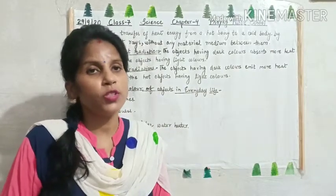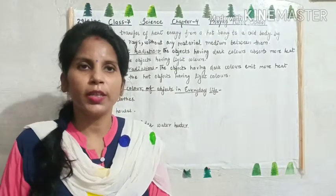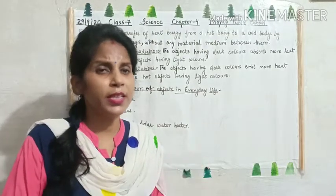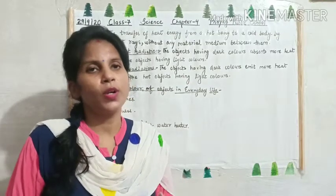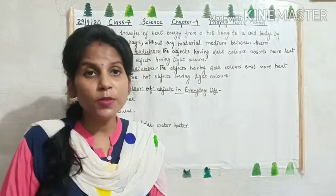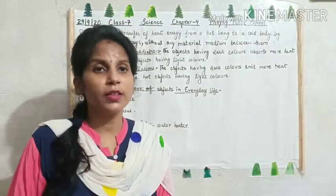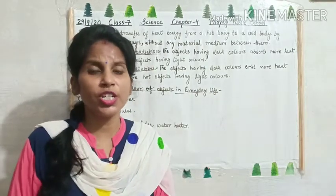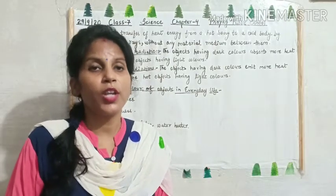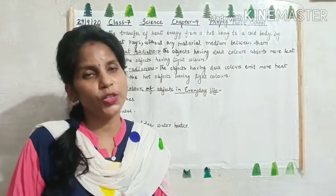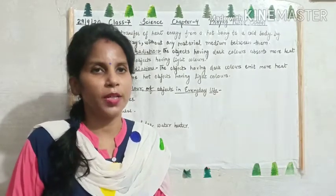So that was about the importance of colors in our life. Children, that was all for today. We have covered all the topics in this chapter: what is heat, what is temperature, what is thermometer, types of thermometer, transfer of heat — conduction, convection and radiation — and land breeze and sea breeze. I will be giving you homework that you have to do in neat and clean handwriting in your homework copy.